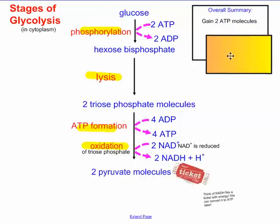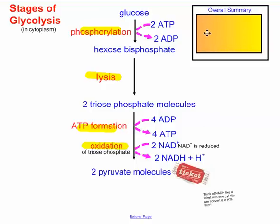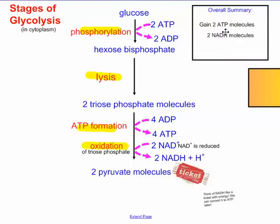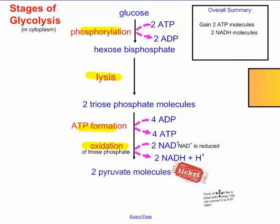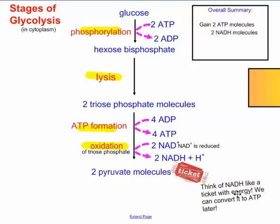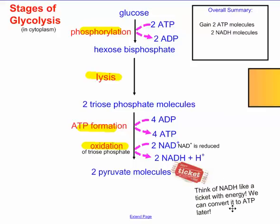Most important thing — if you only remember one thing from the entire process, just remember: start with glucose, splitting sugar, end up with two pyruvate molecules. The end goal is you gain two ATPs and two NADHs. NADH will be converted later — that's our ticket, so keep those in your pocket. Think of NADH like a ticket with energy that we'll exchange later and convert to ATP. All right, three more stages to go. That first stage was glycolysis — remember to think about the big picture and not get overwhelmed by the small details. They will come.